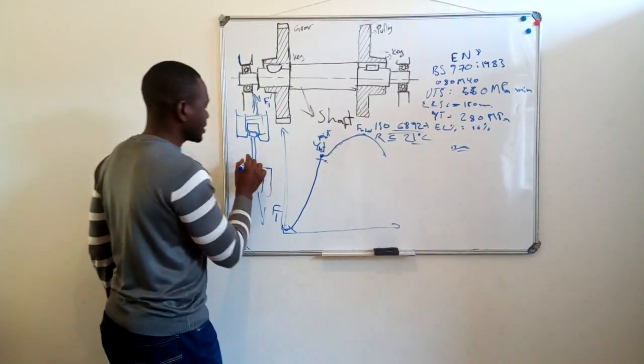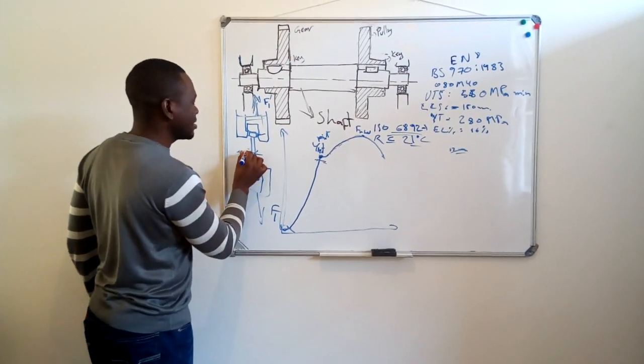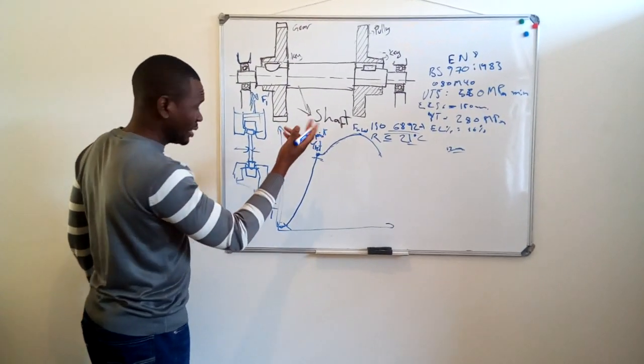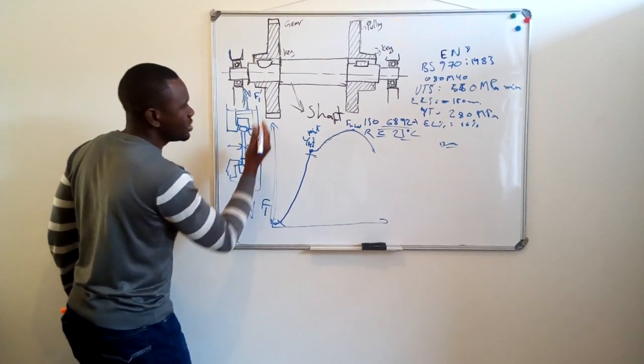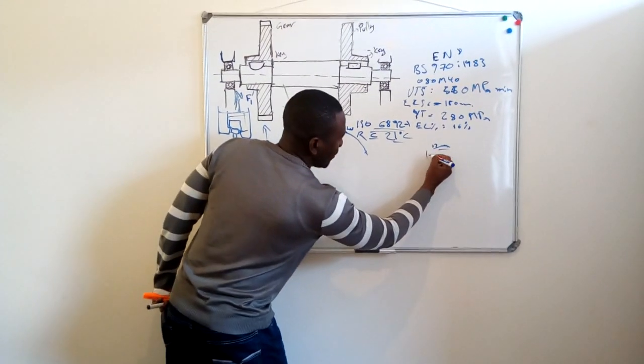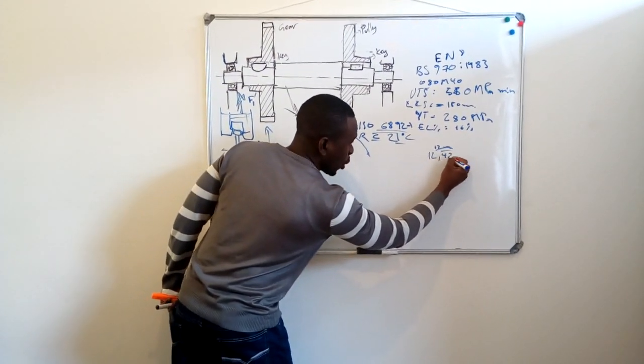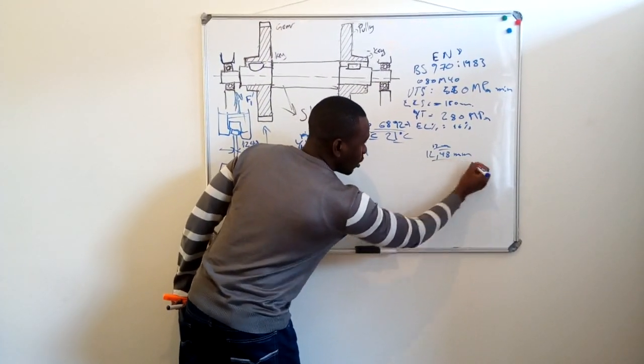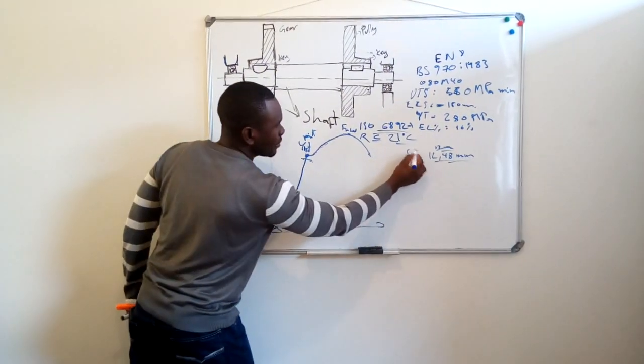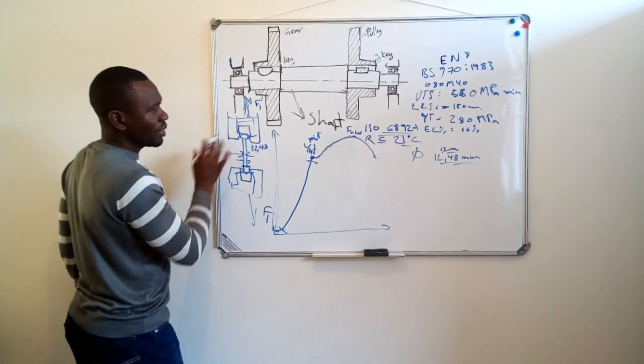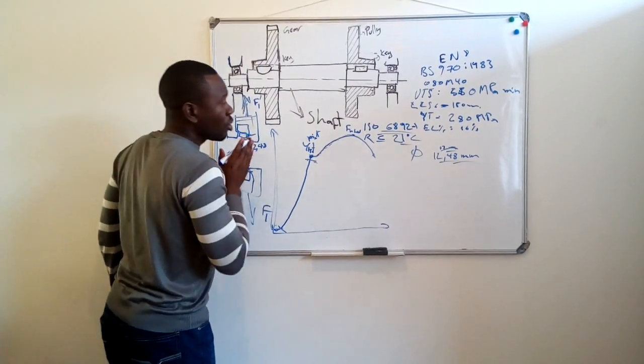In this case, this machine was set according to the normalization of ISO 6892-1. It's machined to 12.58 millimeters. The dimension is 12.48 millimeters for our reduced section, that is diameter. So this is our sample.